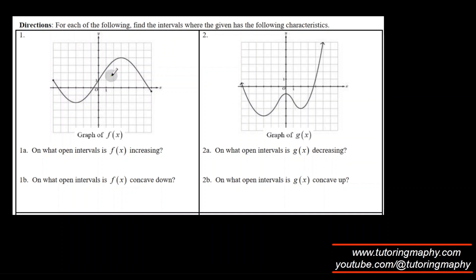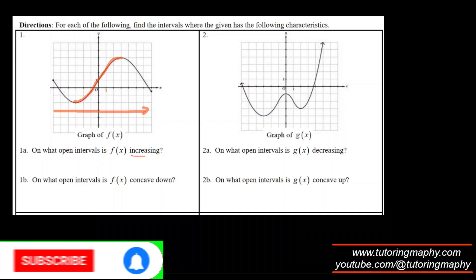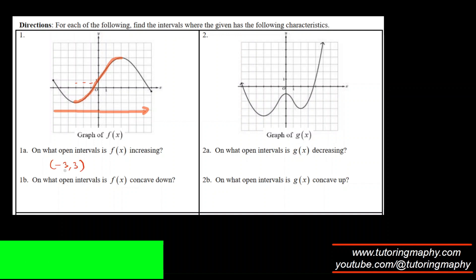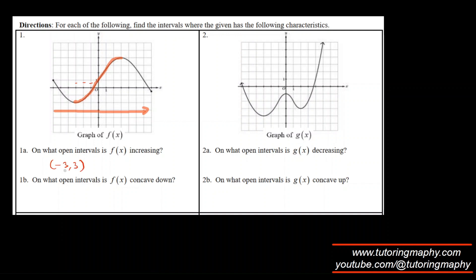It's a strong recommendation to always assess increasing and decreasing while going from left to right, not right to left — otherwise you'll get exactly the opposite answer. Going from left to right, the function is going up starting from this point all the way to another point. That increasing interval is from negative 3 to 3.